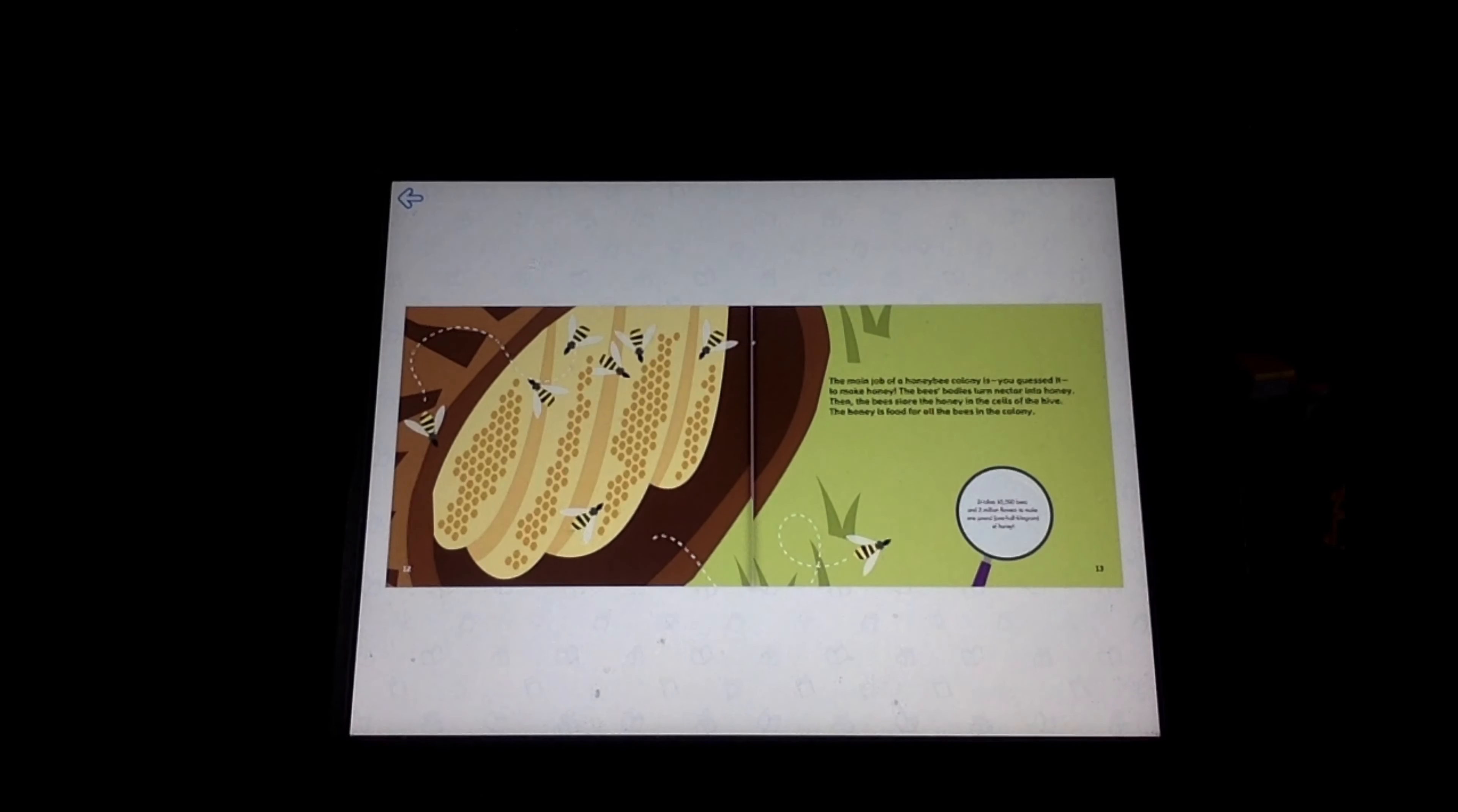The main job of a honeybee colony is, you guessed it, to make honey. The bees' bodies turn nectar into honey. Then the bees store the honey in the cells of the hive. The honey is food for all the bees in the colony.